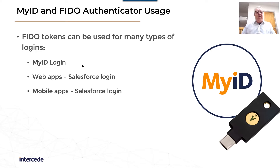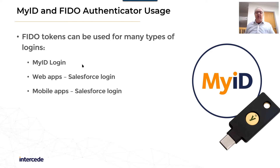What we're going to show you today is using the token we created last time. We're going to log into MyID as we showed in the credential profile — we're able to allow that as a service, so you're able to use your FIDO token to do that. We're also going to look at logging on to web apps like Office 365, and today we'll show you logging on to Salesforce with a FIDO token. We're also going to talk about mobile apps — how you log on to mobile apps using FIDO — and again we'll use Salesforce to show you that.